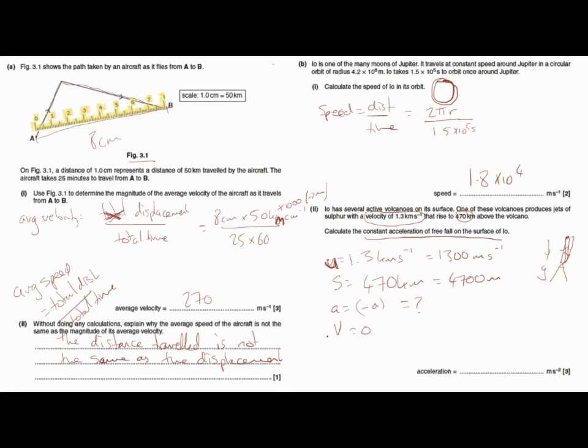So what equation links these together? v squared minus u squared is 2as. So plug in all the numbers and rearrange for acceleration, and you get 1.8 meters per second squared, considerably less than on Earth.